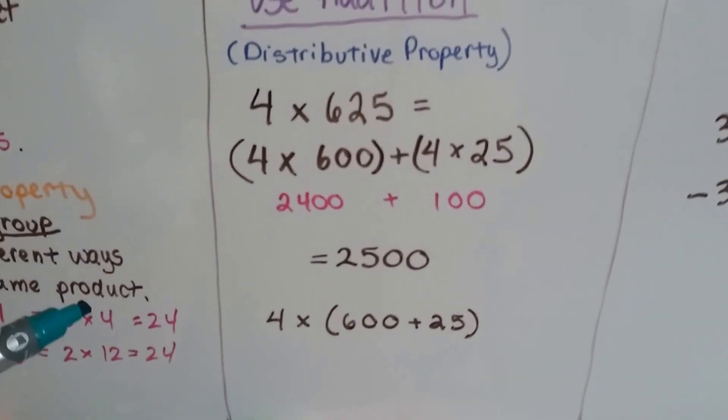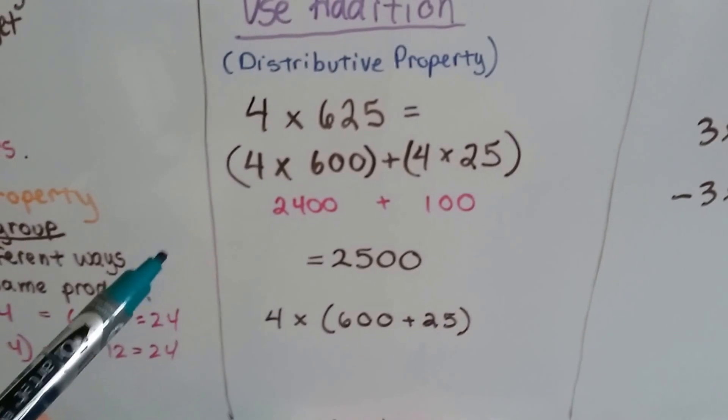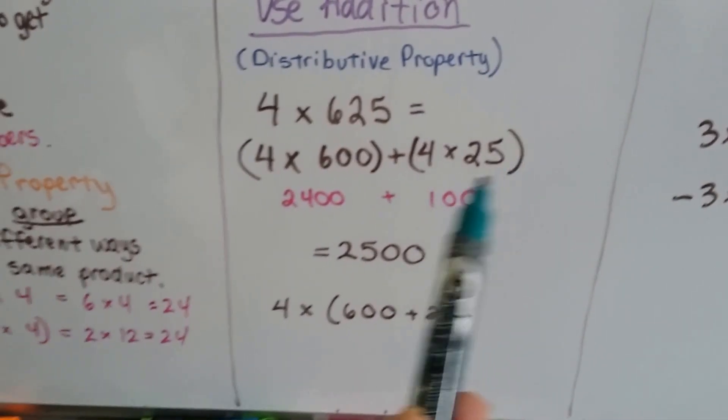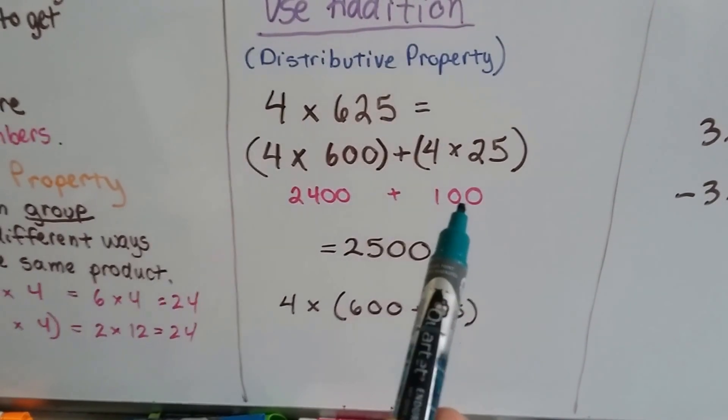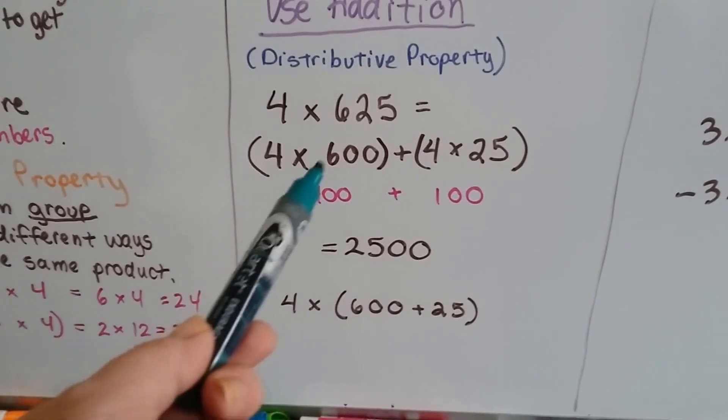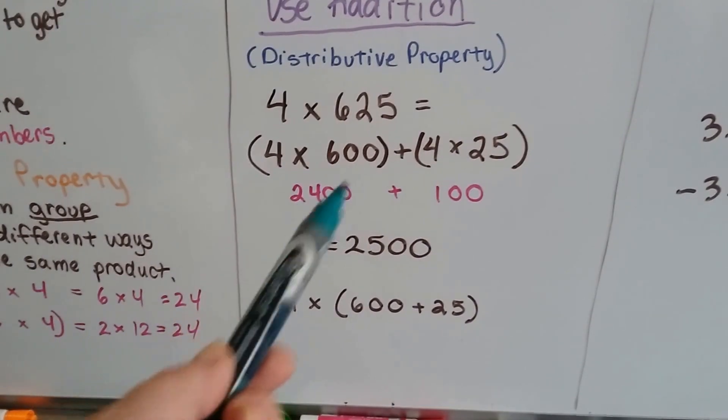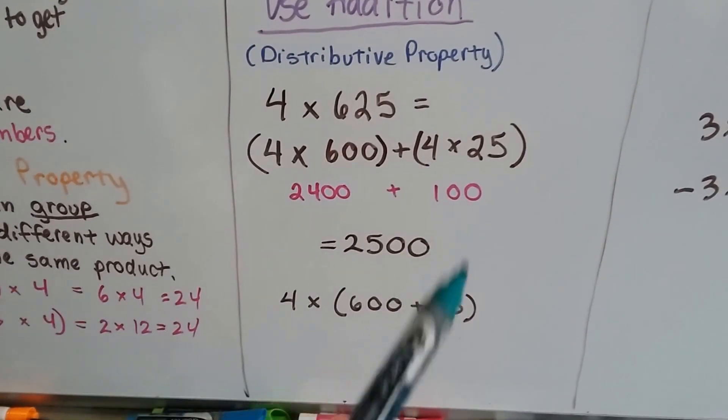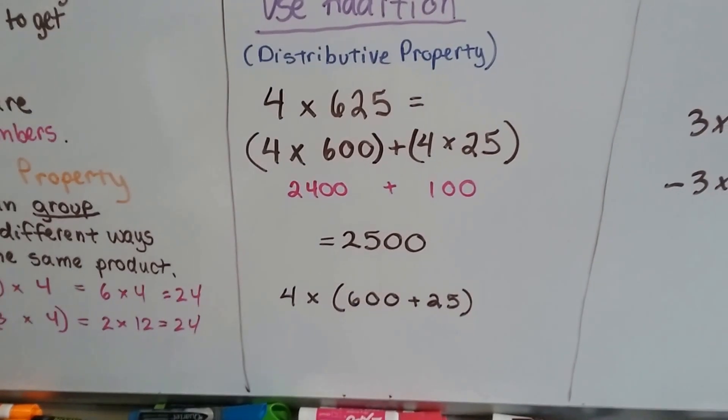If we had 4 times 625, we could break 625 into 600 and 25. 4 times 25 is like 4 quarters in a dollar, that's 100. 4 times 600 is like 4 times 6 with two zeros at the end, so that's 2400. We add 2400 to 100 and get 2500.